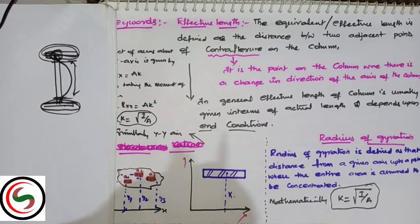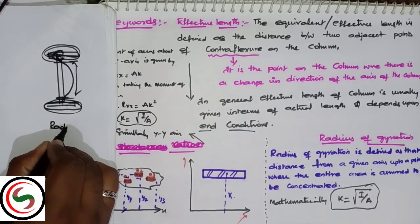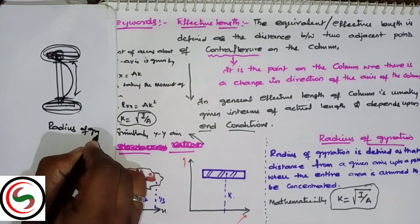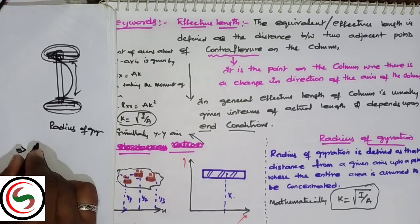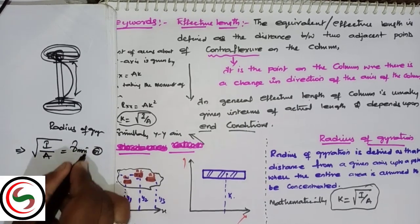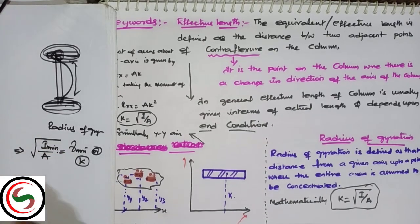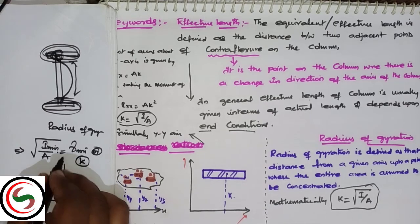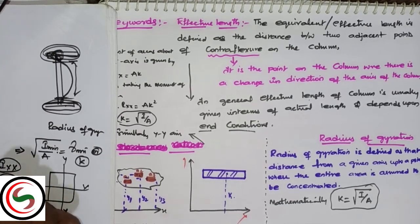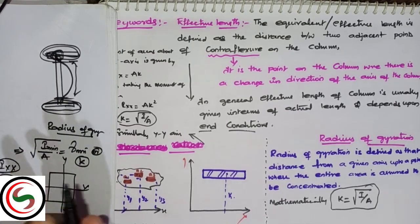In general, the effective length of the column is usually given in terms of actual length and depends upon end conditions. Coming to the radius of gyration, the mathematical formula is important to remember.